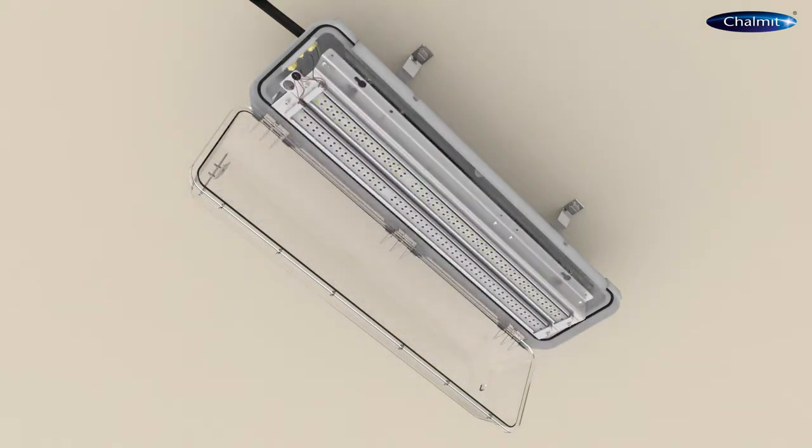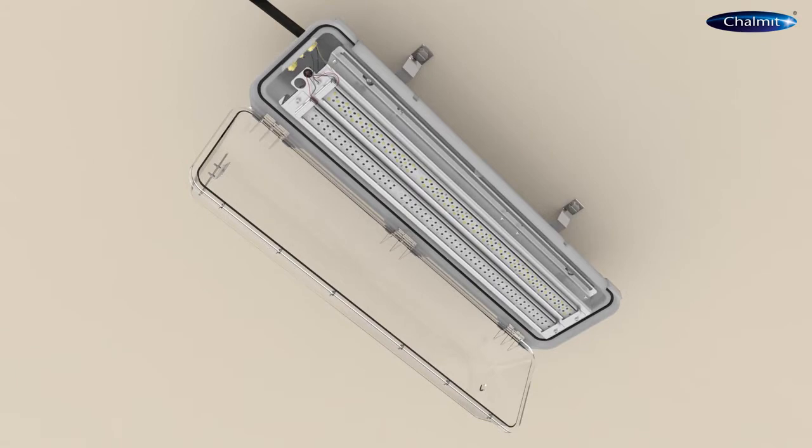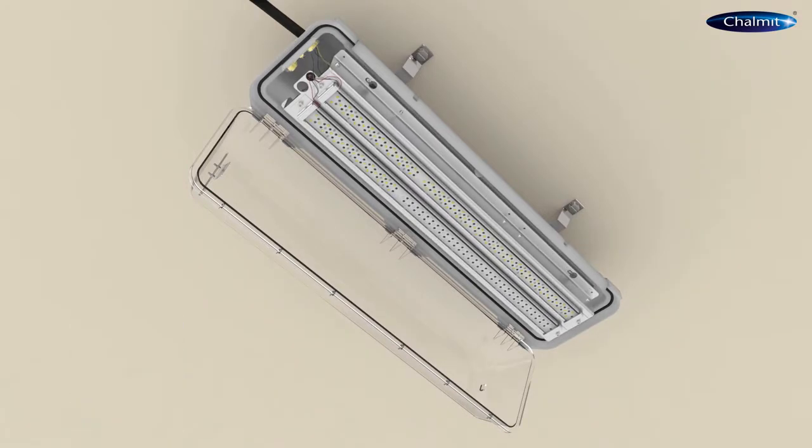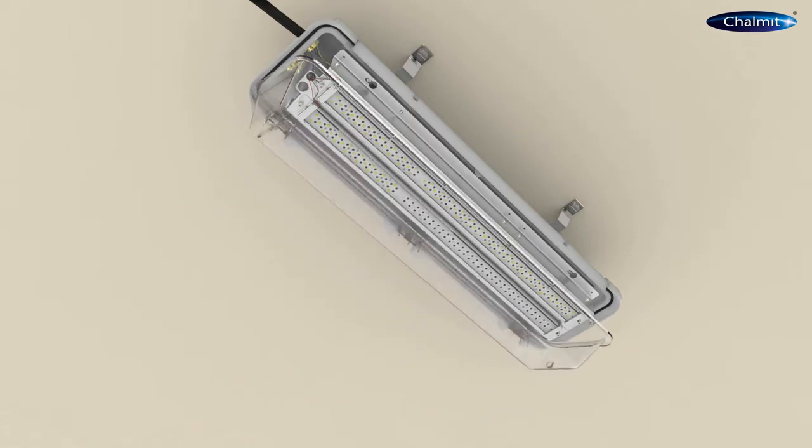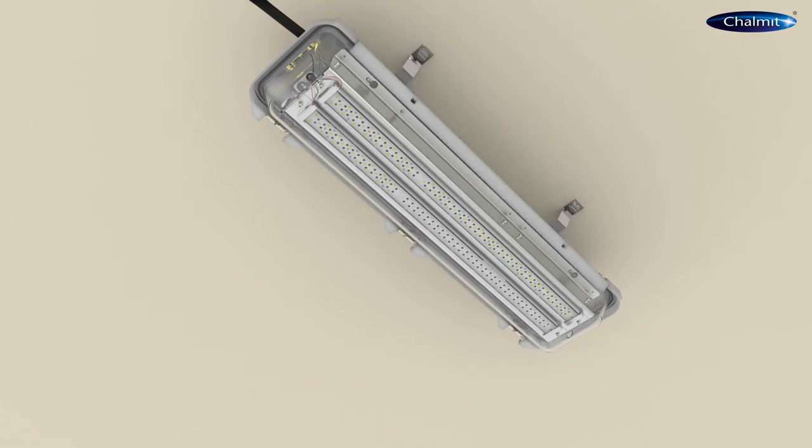Locate the gear tray onto the body using the keyhole slots and slide into position before tightening the four screws. Close the diffuser and secure the clamp bar before applying power.